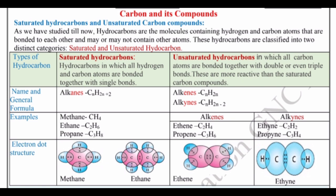These hydrocarbons are classified into two distinct categories: saturated and unsaturated. Saturated hydrocarbons are those in which all hydrogen and carbon atoms are bonded together with a single bond. Unsaturated hydrocarbons are those in which carbon atoms are bonded together with double or triple bonds, and these are more reactive than saturated carbon compounds.